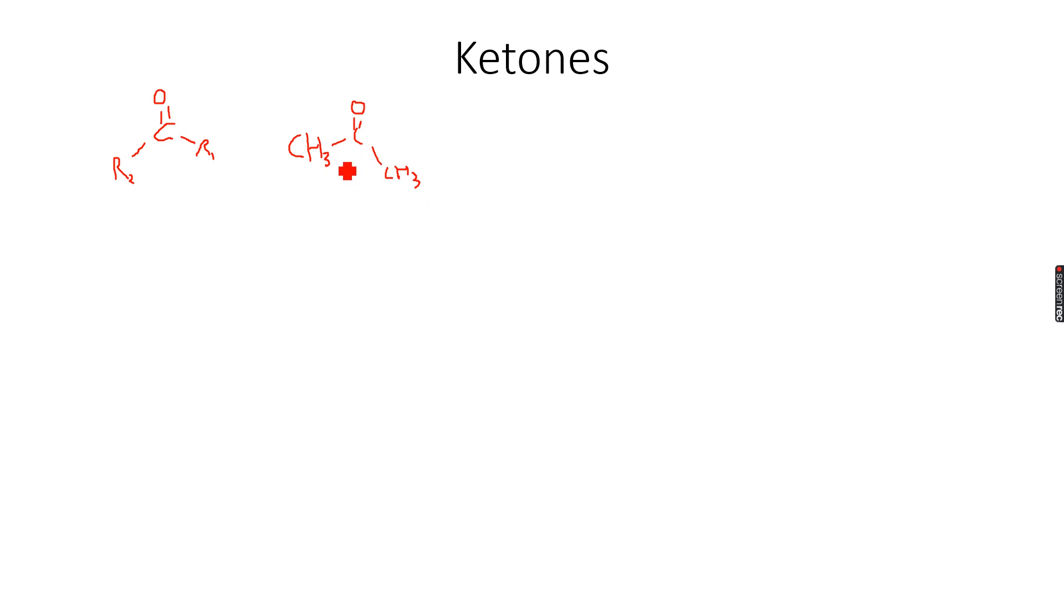So this is the simplest ketone, because you can see that the simplest alkyl group that we can attach on both sides is the methyl group. If we attach hydrogens, it will become an aldehyde, so we cannot attach hydrogens, we have to attach the methyl groups on both sides. So this is a ketone. Now how do we name this ketone? It has three carbon atoms, so we get the prop, and then we name it as propanone. So that's why they are called ketones, because they have 'one' in the end.